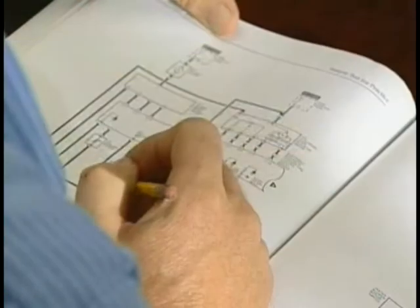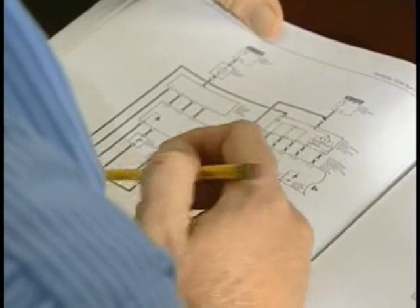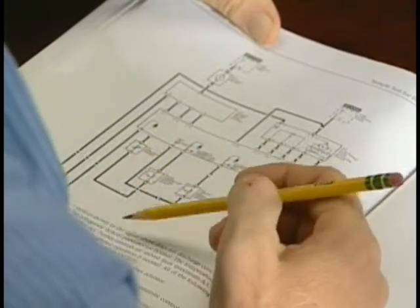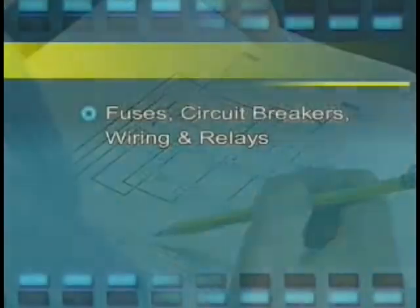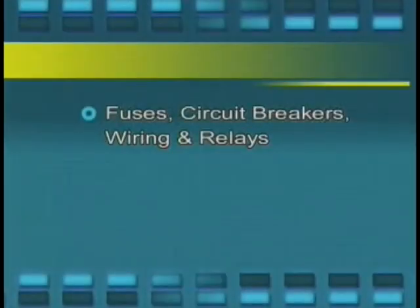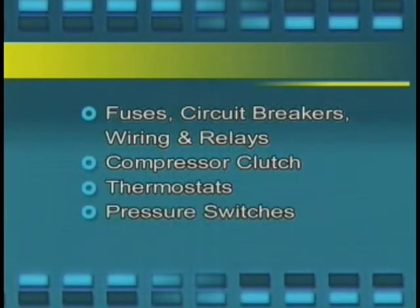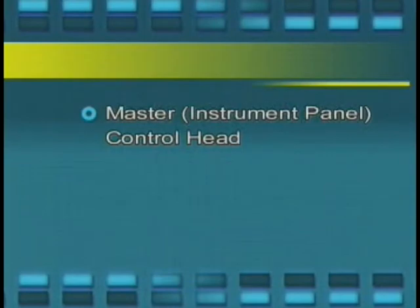Electrical systems that control air conditioning and air distribution operations are the fuses, circuit breakers, wiring and relays, compressor clutch, thermostats, pressure switches, master instrument panel control head, and blower motor.